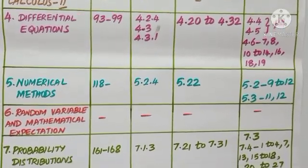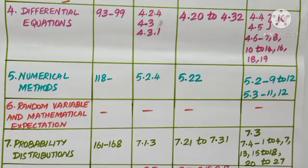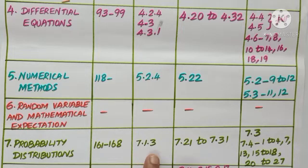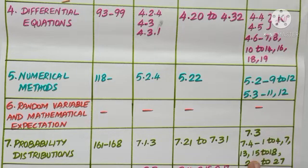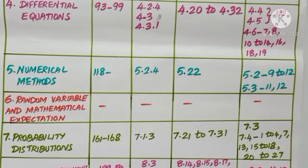Chapter 7: Probability Distributions. Only normal distribution is deleted — pages 161 to 168, Section 7.1.3. Examples 7.21 to 7.31 and Exercise 7.3 are completely deleted. In Exercise 7.4, question numbers 1 to 4, 7, 13, 15 to 18, and 20 to 27 are deleted, as all these questions are based on normal distribution and standard normal distribution.